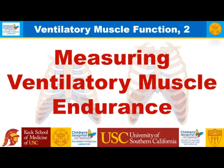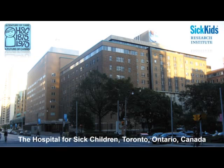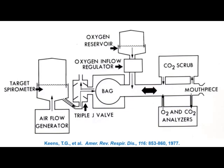To measure ventilatory muscle endurance, we developed a device at the Hospital for Sick Children during my postdoctoral fellowship. Subjects rebreathed through a mouthpiece connected to a bag system to preserve CO2, with a CO2 scrubber, CO2 and O2 analyzers, and an oxygen reservoir to maintain adequate oxygen. An airflow generator filled a spirometer at a set rate. When subjects inspired, they collapsed a bag-in-box drawing air inward; on exhale, air exited through a one-way valve. Subjects had to breathe enough minute ventilation to keep up with the airflow generator.